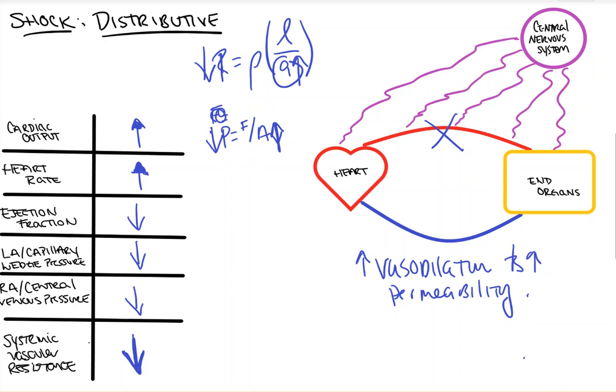So our central venous pressure drops as a result of less fluid in the system like I've marked here. And if our central venous pressure drops, that means that less blood is coming back to the right side of the heart and thus to the left side of the heart, and less blood volume is in the left side of the heart means less pressure in the left atrium. So our capillary wedge pressure drops and our central venous pressure drops.